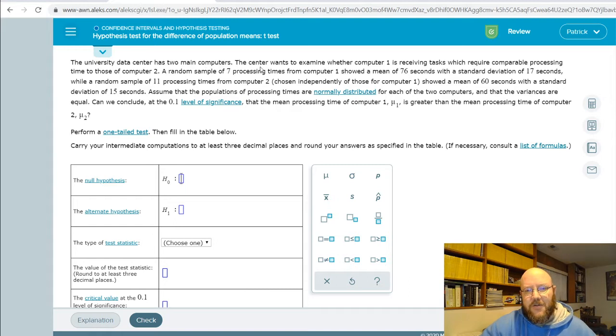So university data center has two computers, center wants to examine whether computer one is receiving tasks which require comparable processing time to those computer two. Random sample of seven processing times from computer one showed a mean of 76 seconds with standard deviation of 17 seconds, while a random sample of 11 processing times from computer two showed a mean of 60 seconds, standard deviation of 15. Assume that the populations of processing times are normally distributed for each of these computers, variances are equal. So if variances are equal, we can use one of the calculators in Mathcracker, that would also be important if we were doing this in Excel which of course, you know, we'll teach you how to do that in the next class.